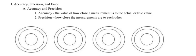Let's talk about accuracy. What is accuracy? It is the value of how close a measurement is to the actual or true value — is your data close to the real data or pretty far away? Precision is how close the measurements are to each other.